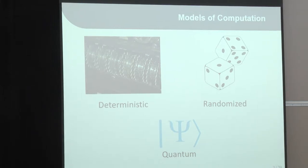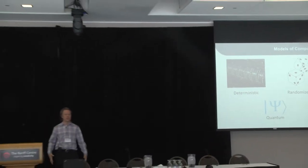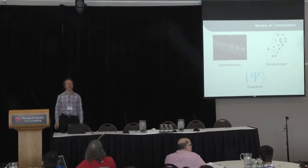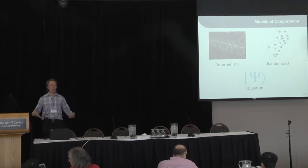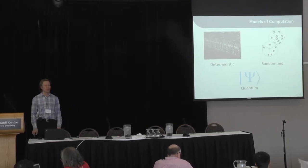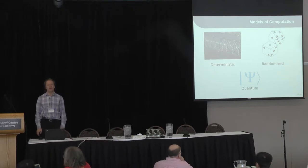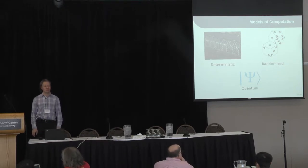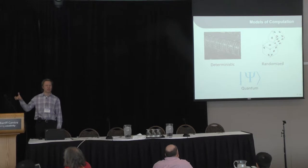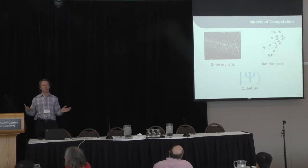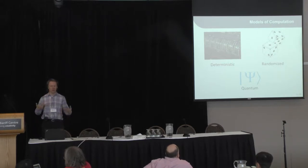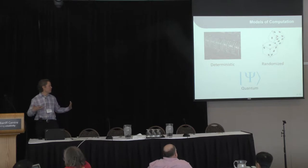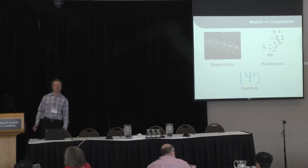We can think of deterministic computation where the next step of the computer is uniquely determined by the previous step — a mechanical computing machine following instructions. Or we can think of a probabilistic computer which flips a coin and chooses the next step probabilistically. Both of those are classical, but these are different models of classical computation. We can also think of quantum computing, which works on quantum states and performs instructions on them.